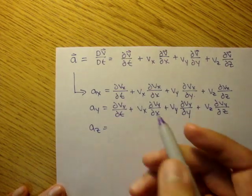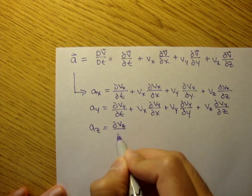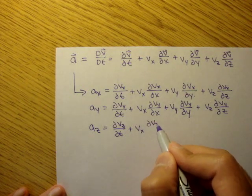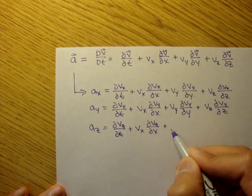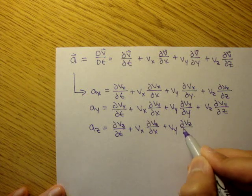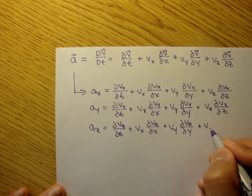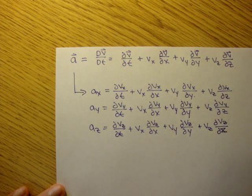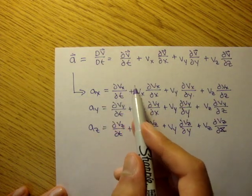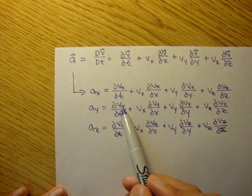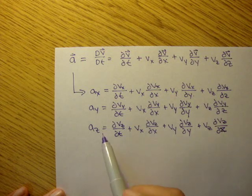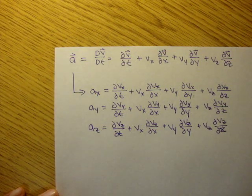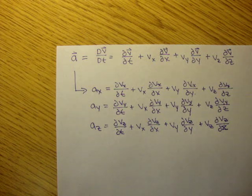Same thing for the z-component of the acceleration: the partial of vz with respect to time, plus vx times the partial of vz with respect to x, plus vy times the partial of vz with respect to y, plus vz times the partial of vz with respect to z. So for ax we use x-components, for ay we use y-components, and for az we use z-components of the velocity field.